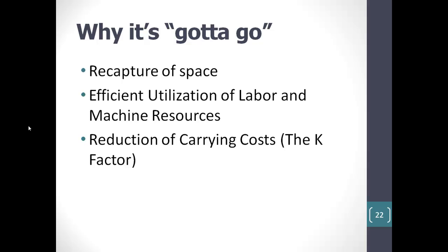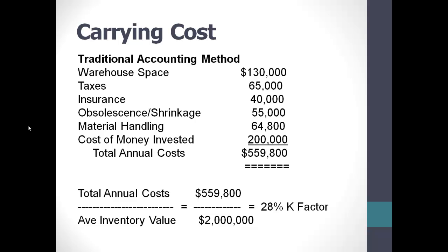Maybe the strongest argument for getting rid of dead stock is to talk about carrying cost — the K factor. The K factor represents the number of pennies per inventory dollar per year a company is spending to house the inventory. If I have a $1 item and it sits on my shelf for a year and my K factor is 25%, meaning I'm spending 25 cents per dollar per year, at the end of that year I now don't have just a dollar in it — I actually have $1.25. If it sits here for two years, now it's $1.50, and so on. There are a couple of different ways of computing the K factor. Right out of the accounting textbooks, the factors you consider are: the cost of warehouse space, taxes, insurance, obsolescence and shrinkage, material handling costs, and the cost of money invested.